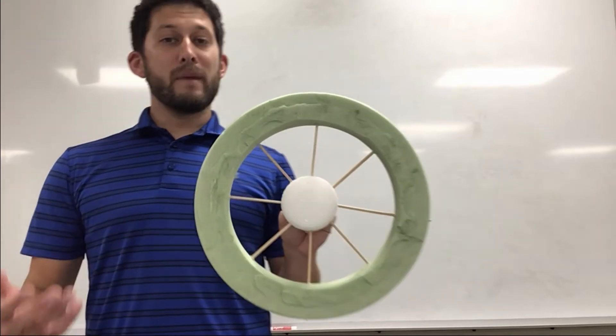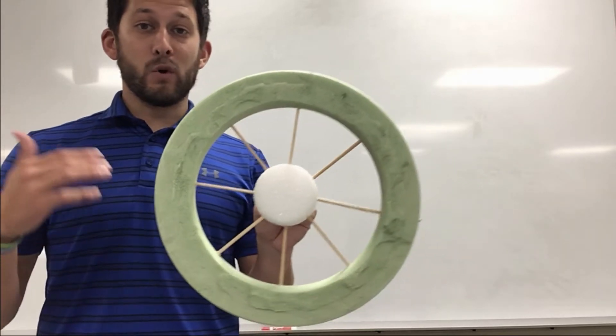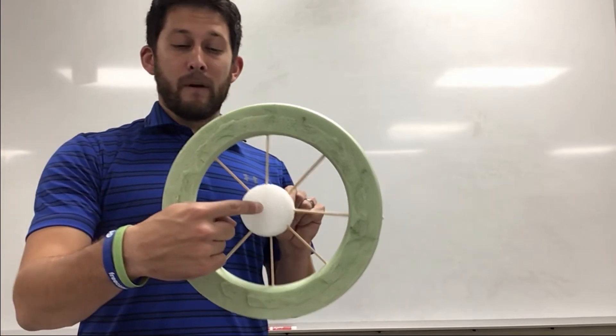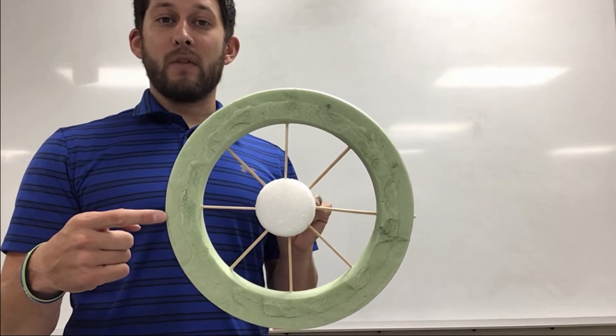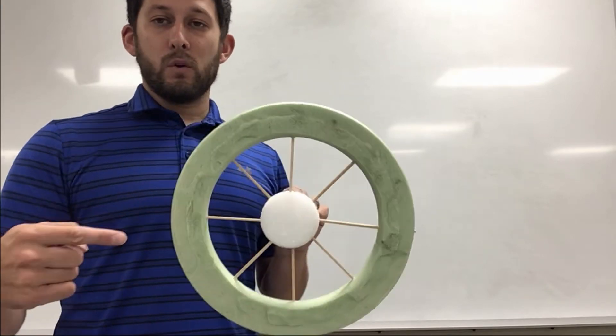So when you are measuring for your effort distance and your resistance distances, you're always measuring from the center part, the axle, to the outside edge. So you are figuring out the radius of your circle.